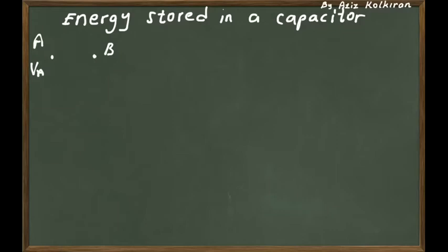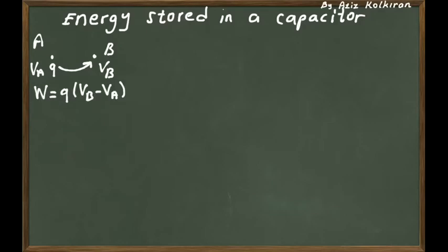You already know that if there are two points A and B, one at potential V_A and the other at potential V_B, and you move a charge Q from point A to B, you have to spend energy equal to Q times (V_B − V_A). This is the electrical energy — the work required to move a point charge between two points at different potentials equals the potential difference multiplied by the charge.